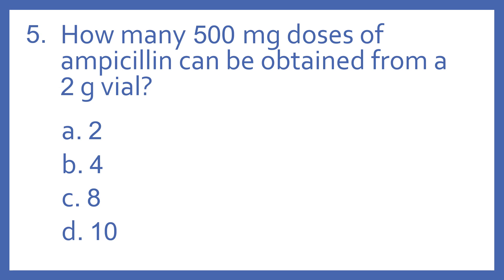Number five. How many 500 milligram doses of ampicillin can be obtained from a two gram vial? A, 2. B, 4. C, 8. Or D, 10.